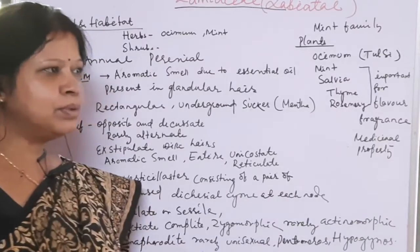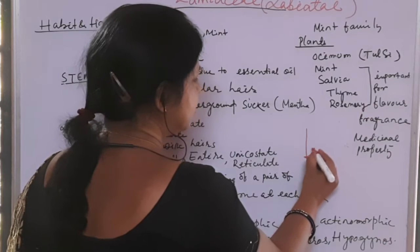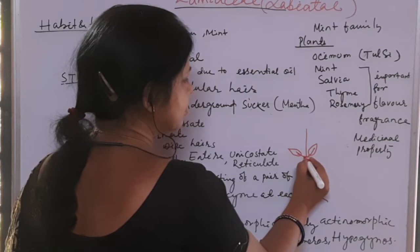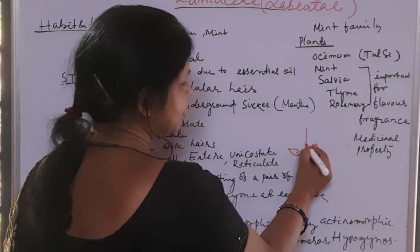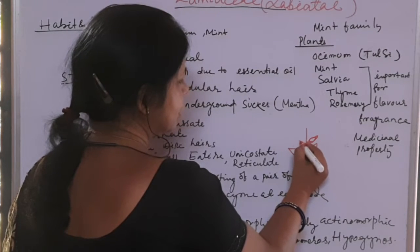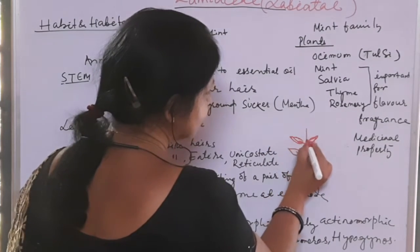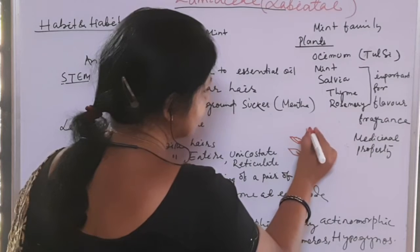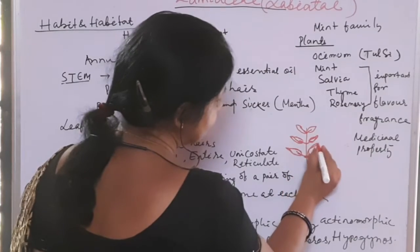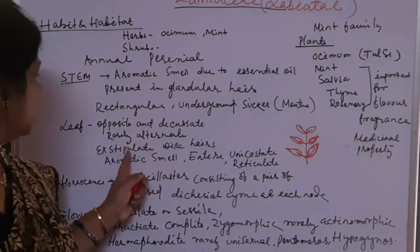The leaves are opposite and decussate. Opposite means leaves arise on both sides from a single node. In decussate arrangement, each successive pair of leaves is at right angles to the previous pair, and the leaves are gradually smaller towards the apex.